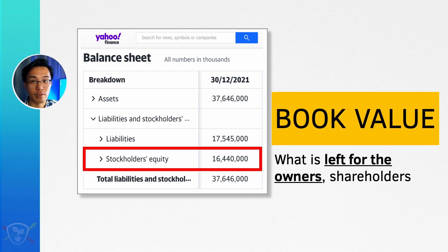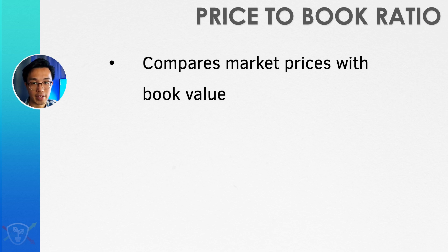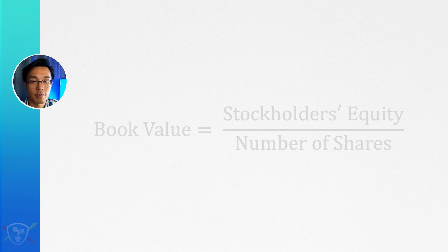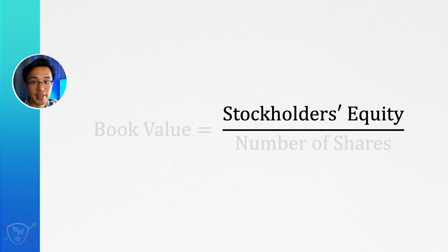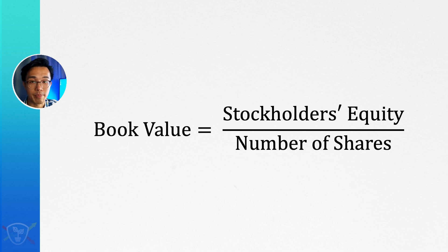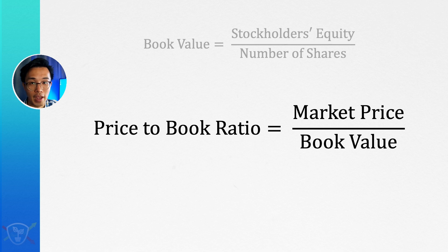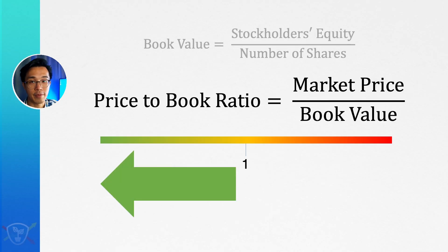What we're doing is taking the book value of these shares and comparing it against the current market price of the shares today. What the PB ratio tells us is: if you go to the market today and buy one share of this company, how much are you paying for every dollar of equity, for every dollar of the book value of this company? The calculation is quite straightforward. We go to the balance sheet, look for the stockholder's equity, divide it by the total number of shares, and that gives us the book value per share. Then the PB ratio is the current market price divided by the book value per share. If this number is less than one, we are paying less than one dollar for every dollar of book value.